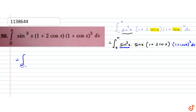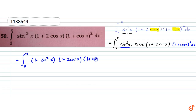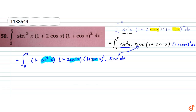We convert sin²x into cos²x using the identity sin²θ + cos²θ = 1, so sin²x = 1 − cos²x. This gives us (1 − cos²x) times (1 + 2cosx) times (1 + cosx)² times sinx dx. Now we have all cos terms, and sinx is its derivative, so we can make the necessary substitution.